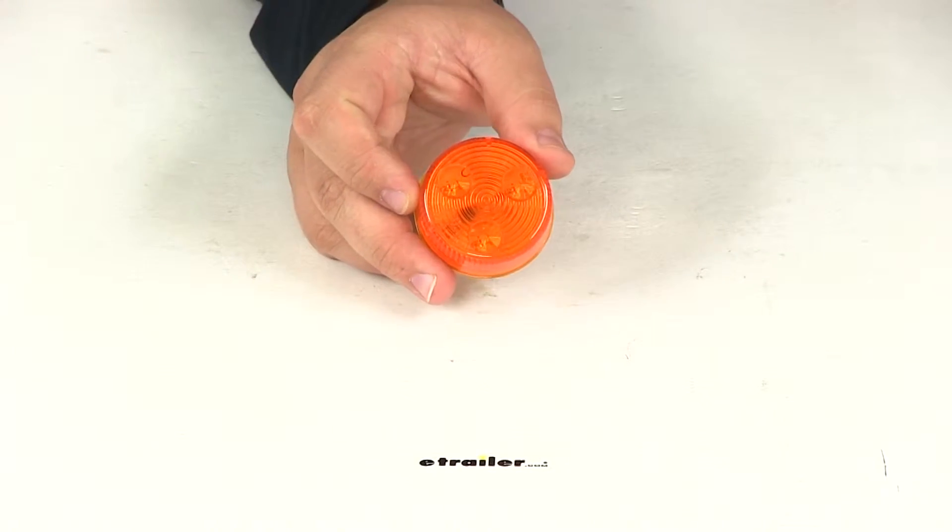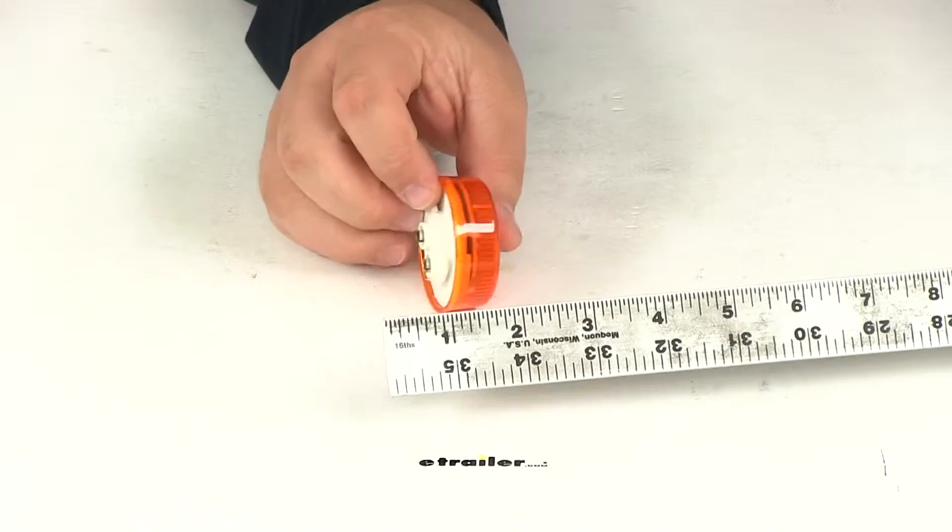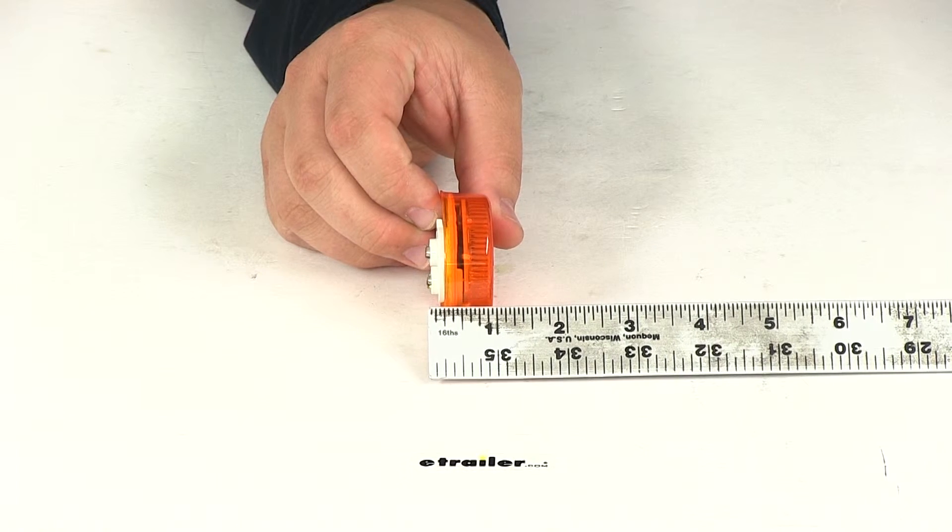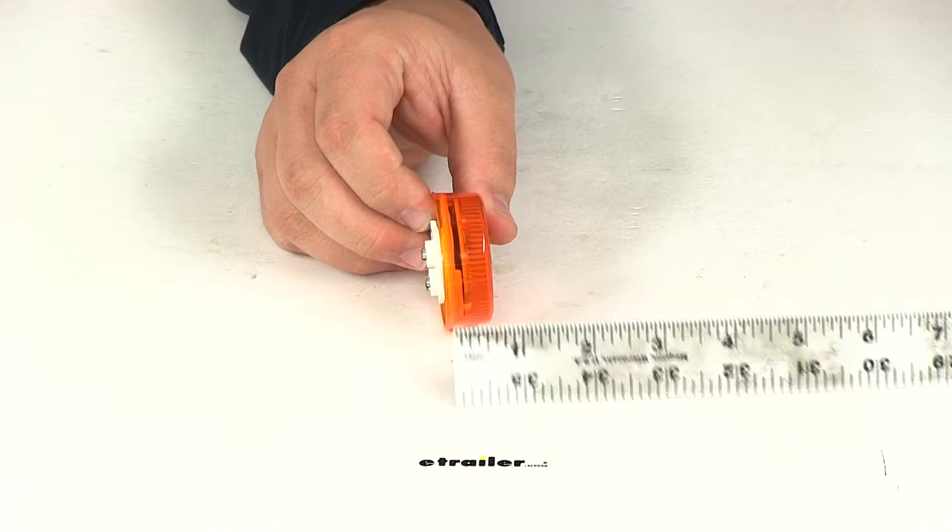If we take a look at the overall dimensions it's going to give us a diameter of about two inches. The overall depth including the plug at the back is going to measure about one inch deep. If we just take a measurement of the depth of the lens we're looking at about three quarters of an inch.